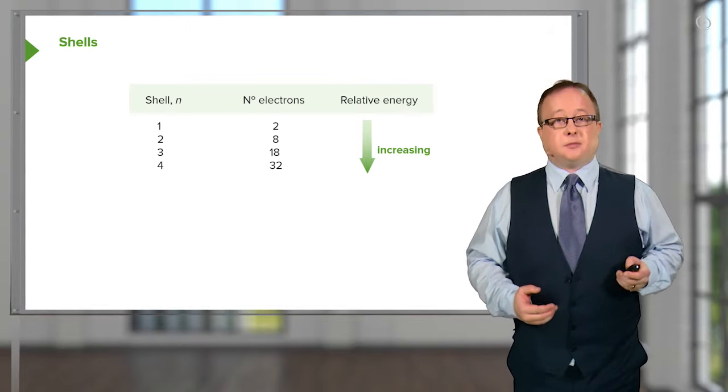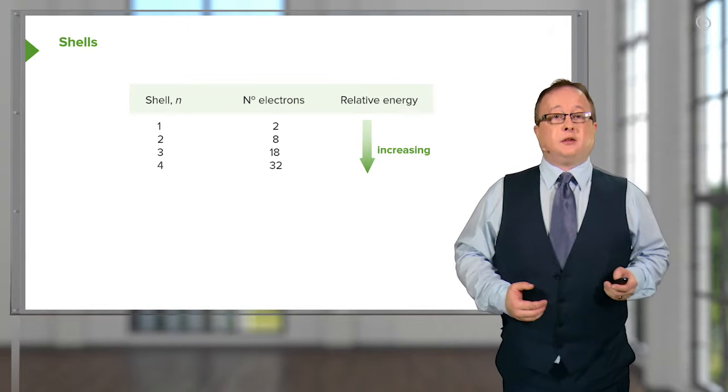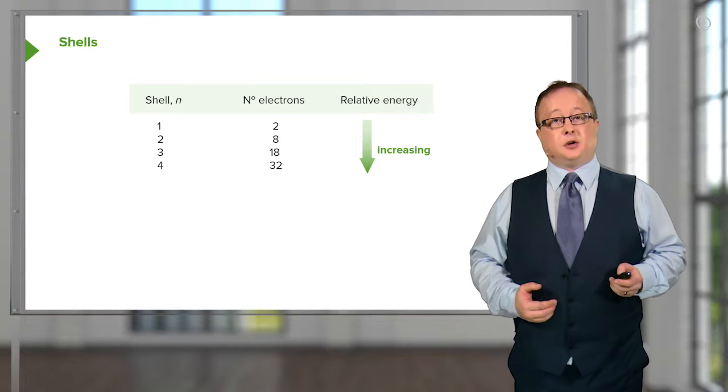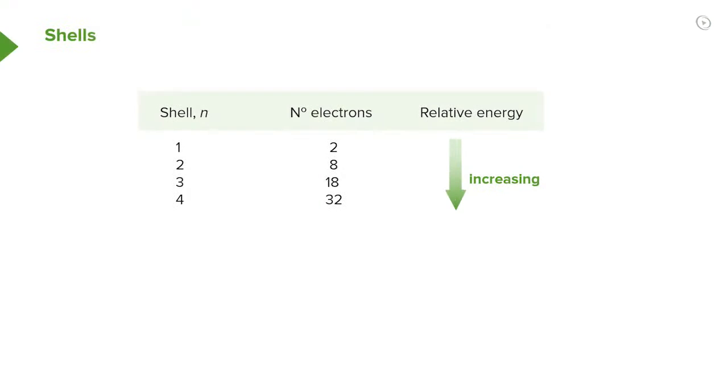From a quantum perspective, each shell can carry a specific number of electrons. Shell one, which is nearest the nucleus, can carry only two electrons.